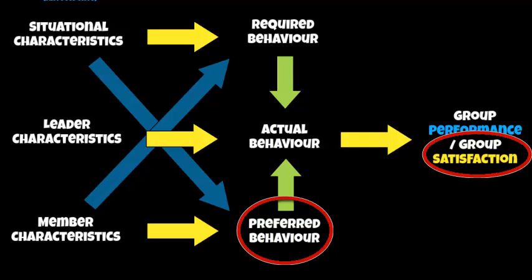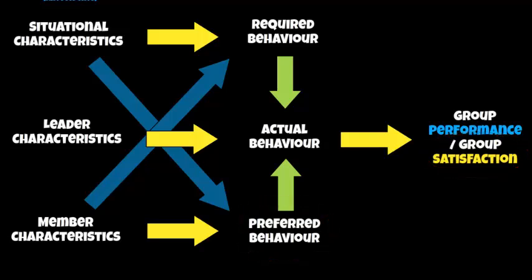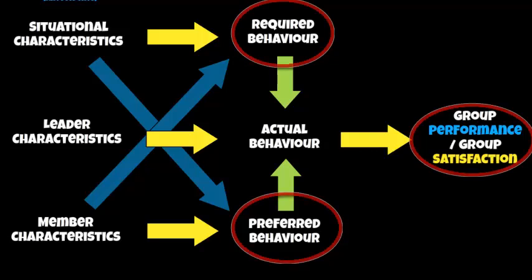For example, you have a really nice social group, but they are on the edge of Beachy Head. Your actual behaviour might be to be democratic and let them do what they wish — they might enjoy it and not fall over the edge, but the group performance in terms of safety orientation is not that good. To get the perfect outcome of both group performance and group satisfaction, your actual behaviour must match both the required behaviour and the preferred behaviour of the group.